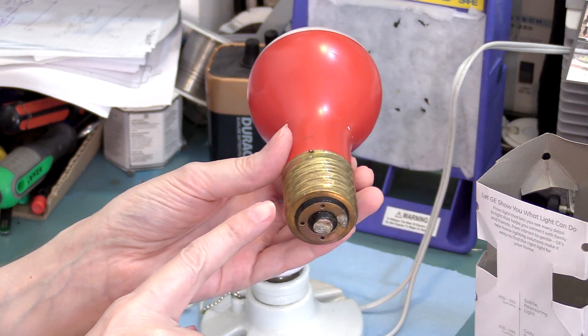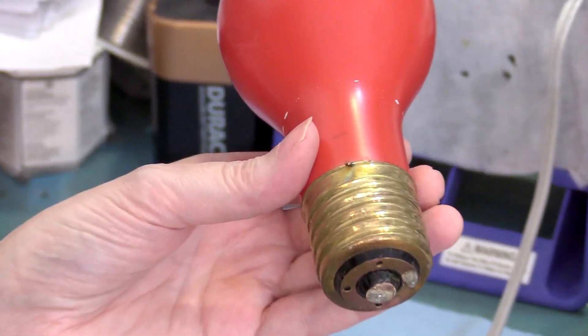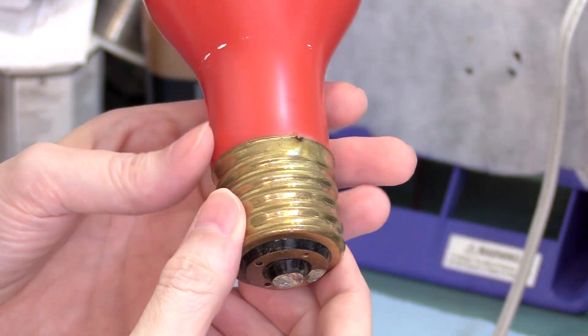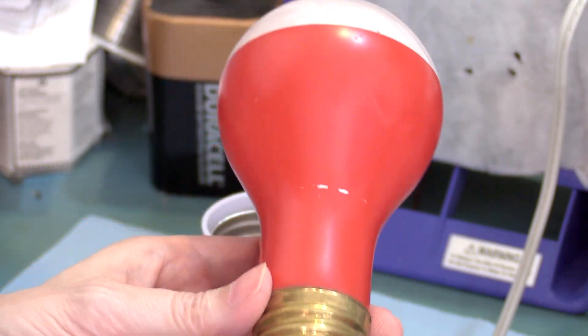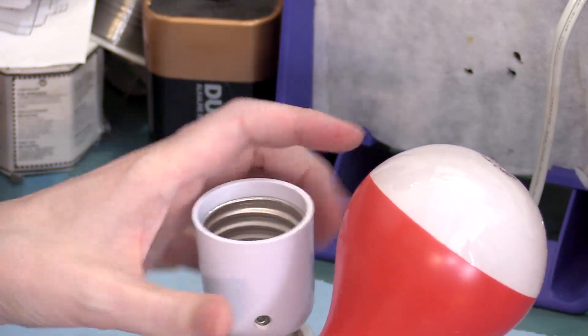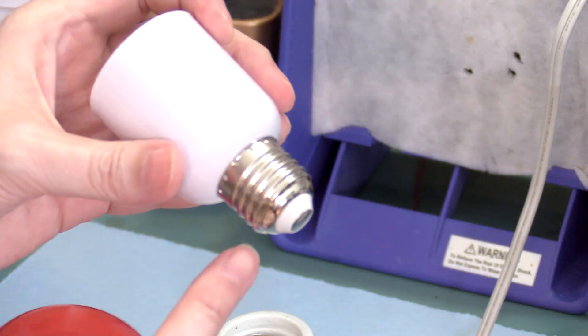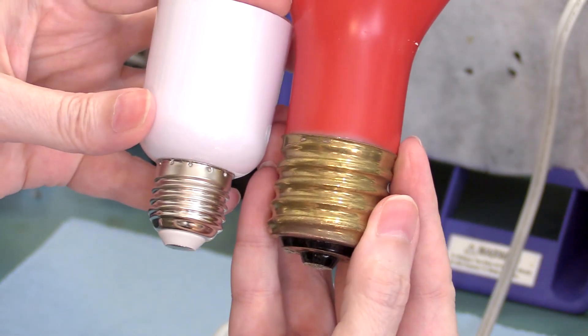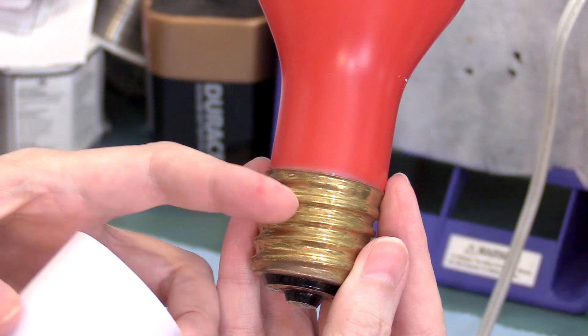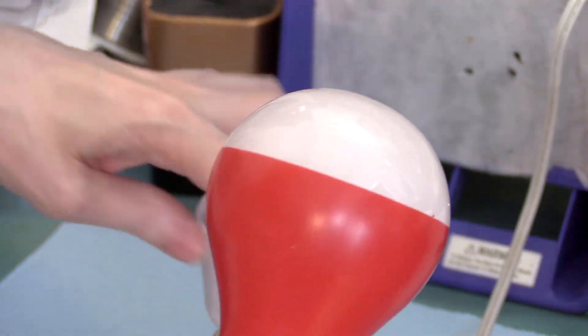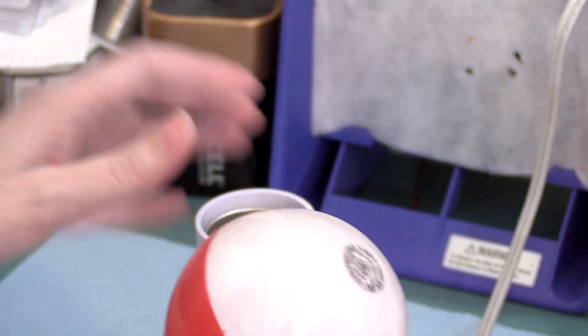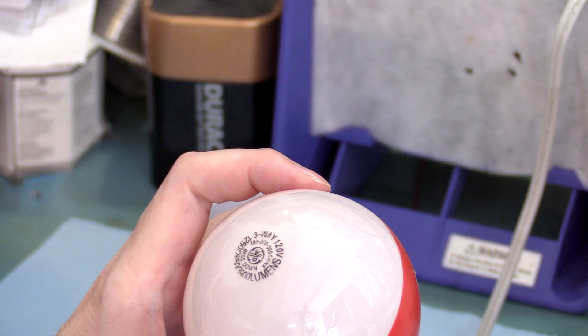This has what they call a mogul base. And the mogul base, it's like an E40 39 size. It's much larger than the standard Edison, which I use this converter for. This is the standard Edison socket. It's much larger. And these sockets are intended for commercial bulbs, for light bulbs that are of much higher power, like in excess of a thousand watts usually.